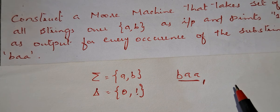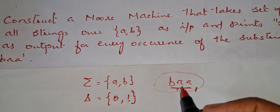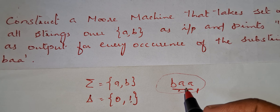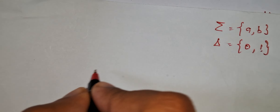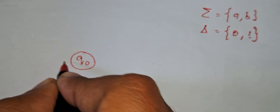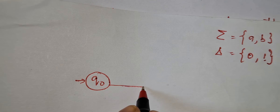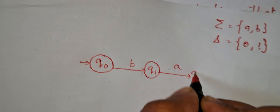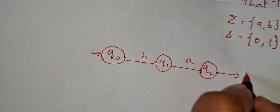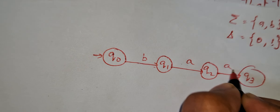If the problem is about finding the number of occurrences of a particular substring, you need to draw the automata for accepting the set of all strings ending with that particular substring. So, q0 is the starting state, then on b go to q1, on a go to q2, on a go to q3.